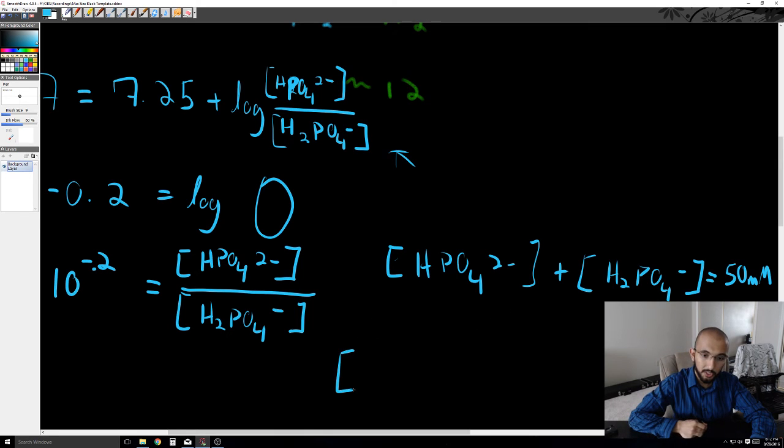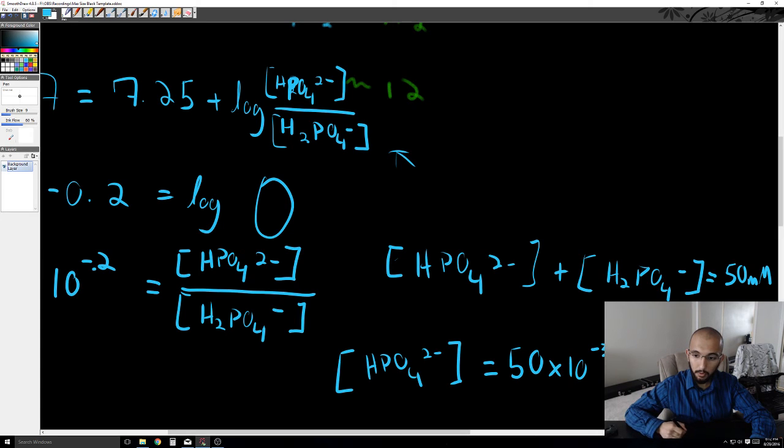So the concentration of HPO42- is going to be equal to 50 times 10 to the negative 3 molar minus the concentration of H2PO4-.